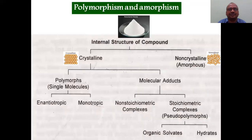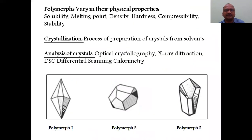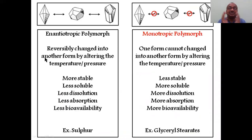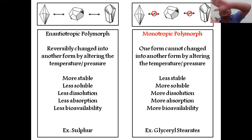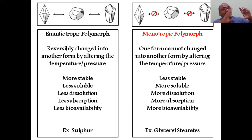Within polymorphism, there are two important subtypes: enantiotropic and monotropic. Enantiotropic means one form can be converted into another form, and that form can be converted back — interconversion is possible with the help of pressure and temperature. If you change the temperature, polymorph one becomes polymorph two, and you can reverse it.